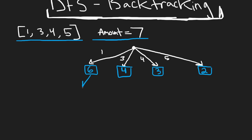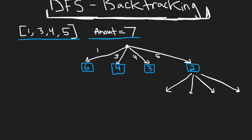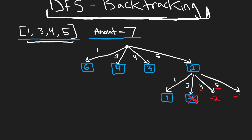Starting from the five branch, we still have four coins with unlimited quantities. If we choose a three from the remaining two, we get negative one — meaning five plus three exceeds seven, so we stop searching that path. Since choosing four or five from here also goes negative, we don't need to search those paths either.